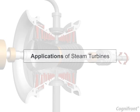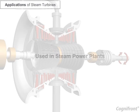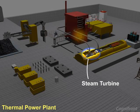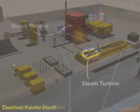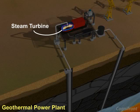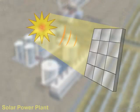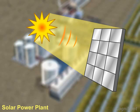Let us view the applications of steam turbines. Steam turbines are mainly used in steam power plants, for example: thermal power plants, geothermal power plants, nuclear power plants, and solar power plants.